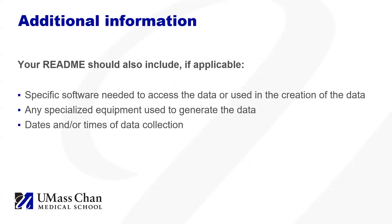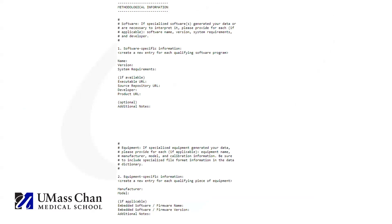If applicable, your README file should also contain additional information that may be important to understand your data. This may include special software used to create or access the data, specific equipment used to generate the data, and if relevant, the date and/or times data was collected. The goal is to ensure future researchers, including yourself, can fully understand your data. Do not assume that something will be obvious. Here you see the methodological information section, where you will add the additional information necessary for your dataset, like the software or equipment needed, and any other important information not covered by a previous section.